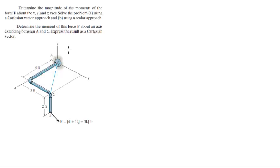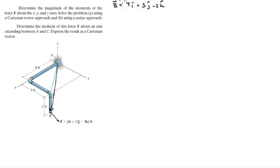For more videos visit ForTheSakeOfEducation.com. We're going to do these two problems. For the first one, they want you to find the magnitude of the moments of F about the x, y, and z axes, and solve this problem using a Cartesian vector approach and then using a scalar approach. Point B, where the force is applied, sits at 4i + 3j - 2k, and the Cartesian vector form of the force is 4i + 12j - 3k.